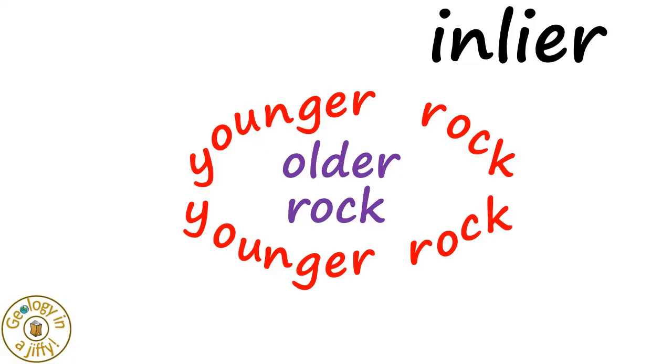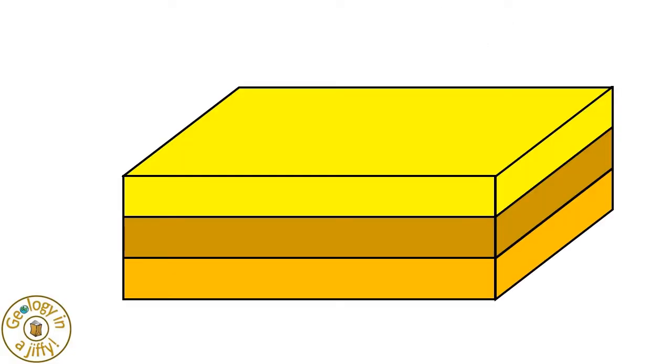A geological inlier is an exposure of older rock that is surrounded by younger rock. Using our same block of layered rocks,